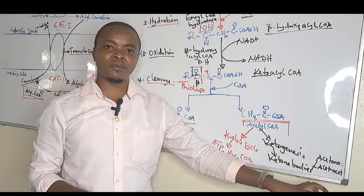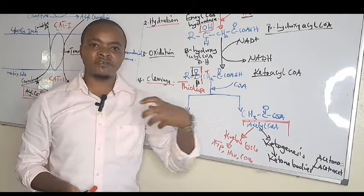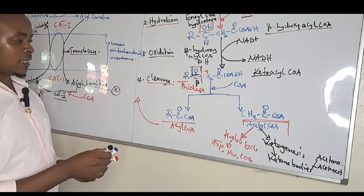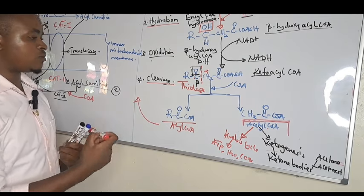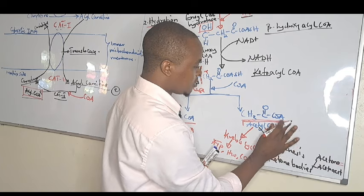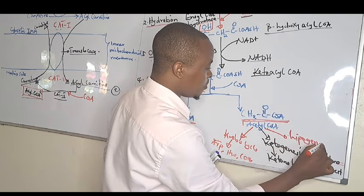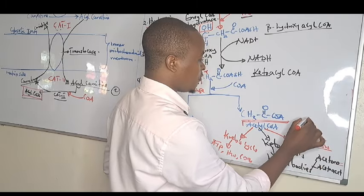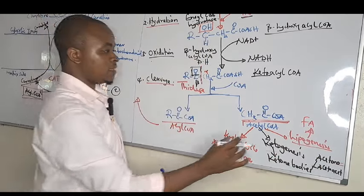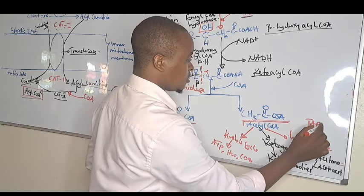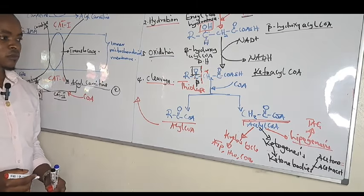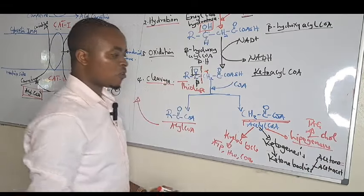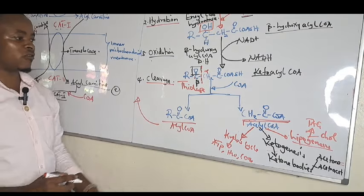That is why diabetic people often produce a fruity smell — acetone is volatile and can be excreted through respiration in the lungs. Another fate of acetyl-CoA is lipogenesis: when the body doesn't need energy and there is no need for ketone body formation, acetyl-CoA can be used to synthesize fatty acids or triglycerides stored in adipose tissue, and also for cholesterol synthesis.